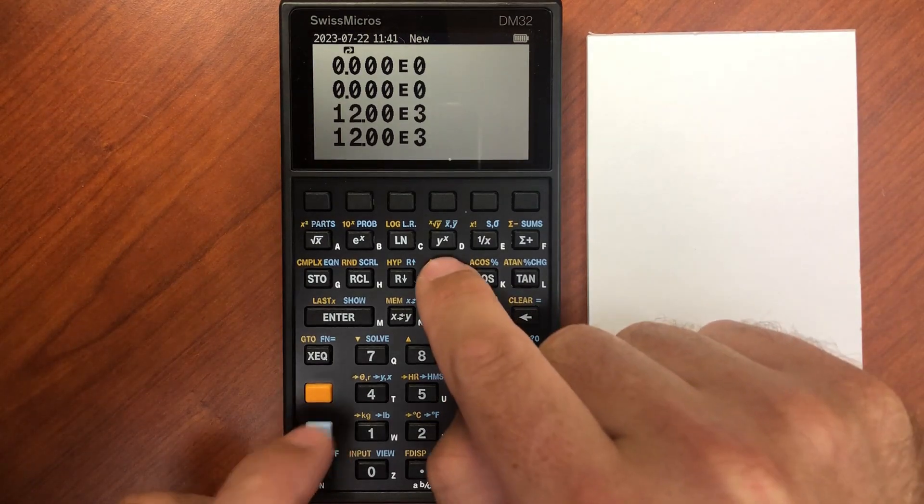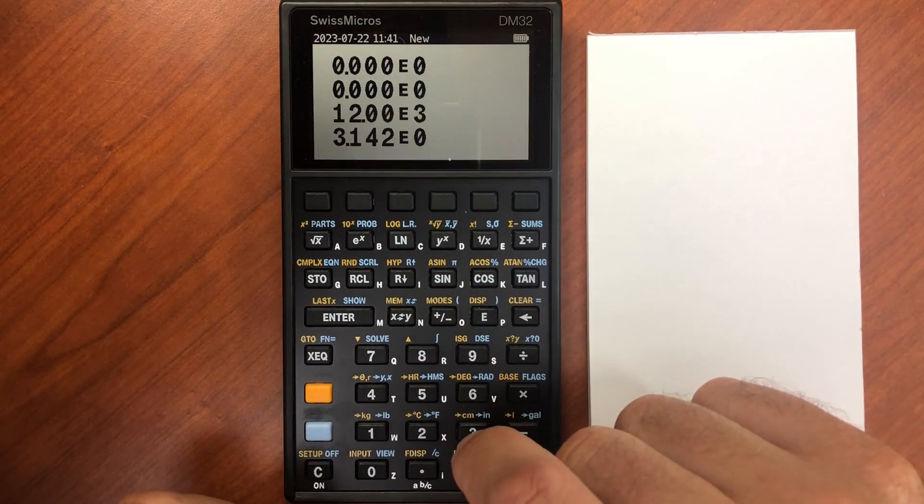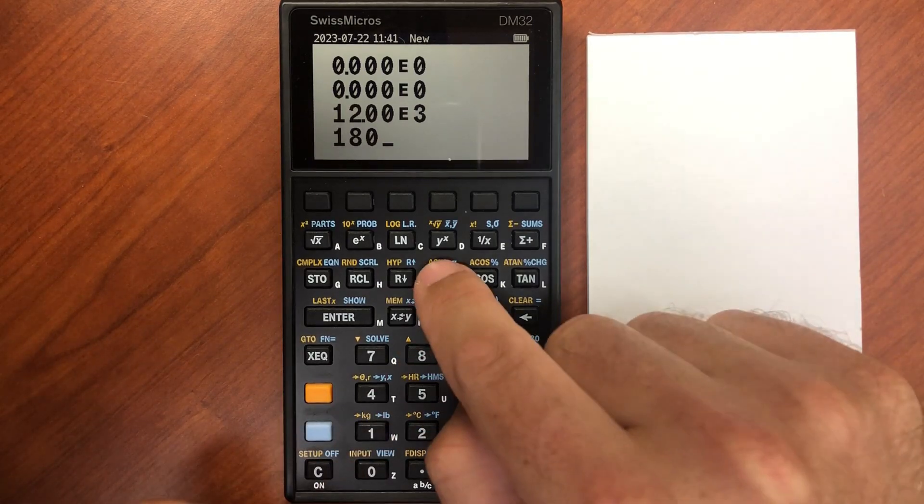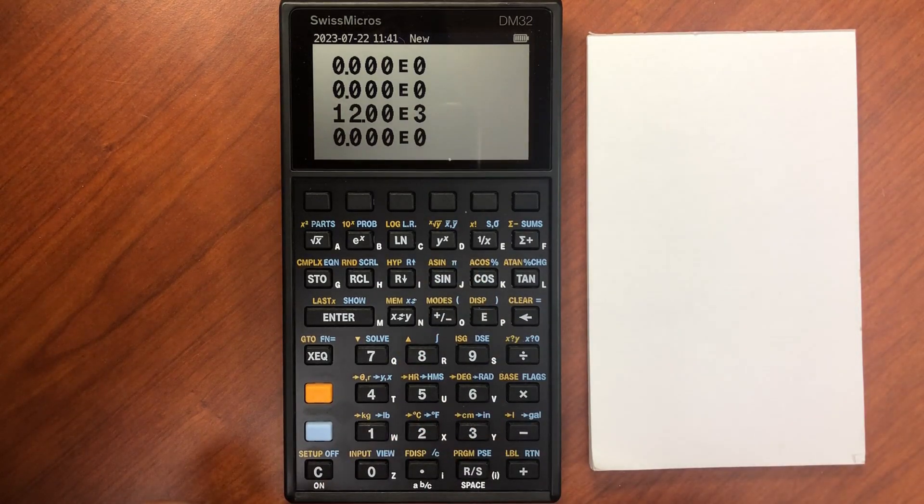and I enter in pi, and let's enter in 180, and then take the sine of that. That gives me zero. The sine of 180 in degree mode is zero.